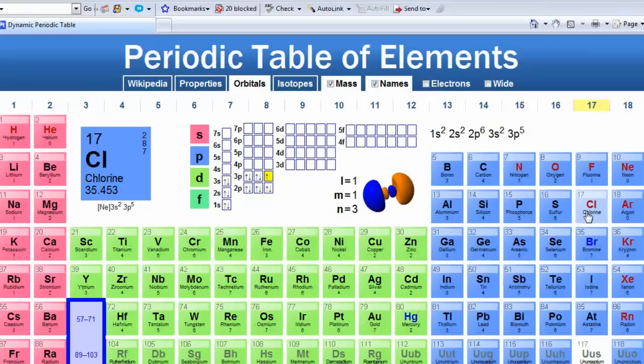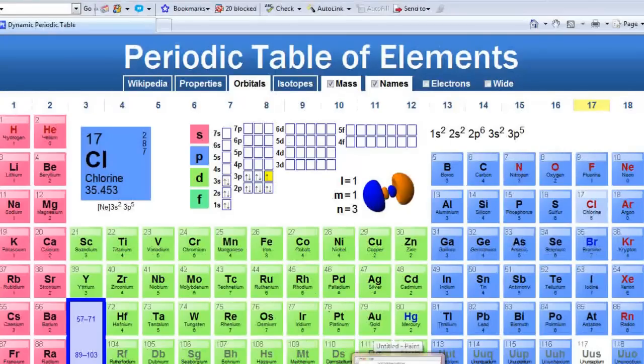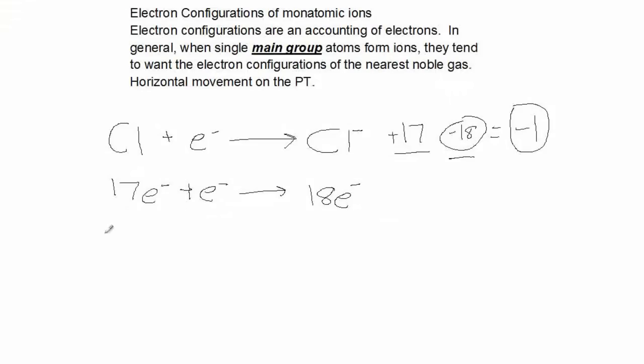Let's take a look at bromine. If you said Br minus 1, you'd be correct. So let's take a closer look at that.